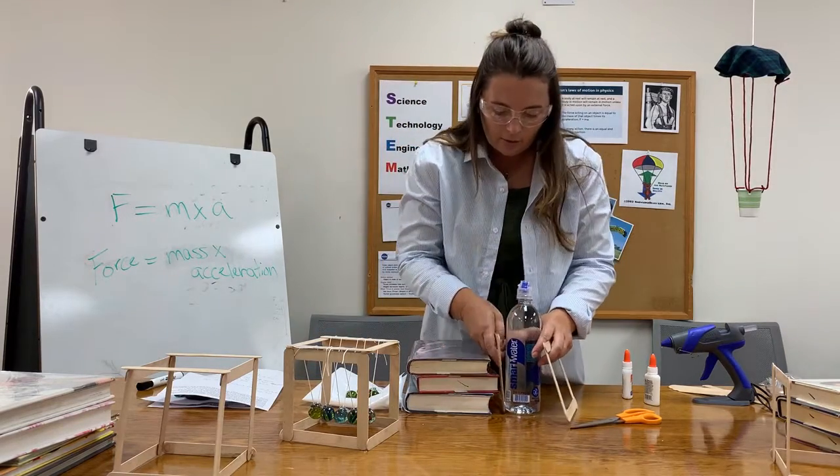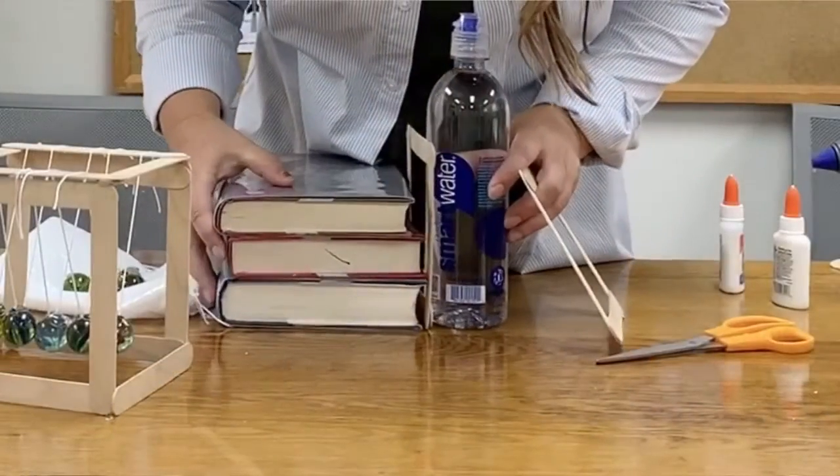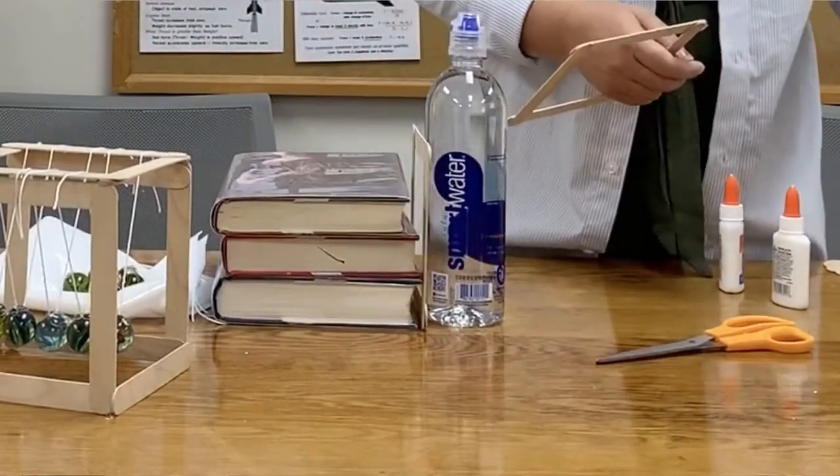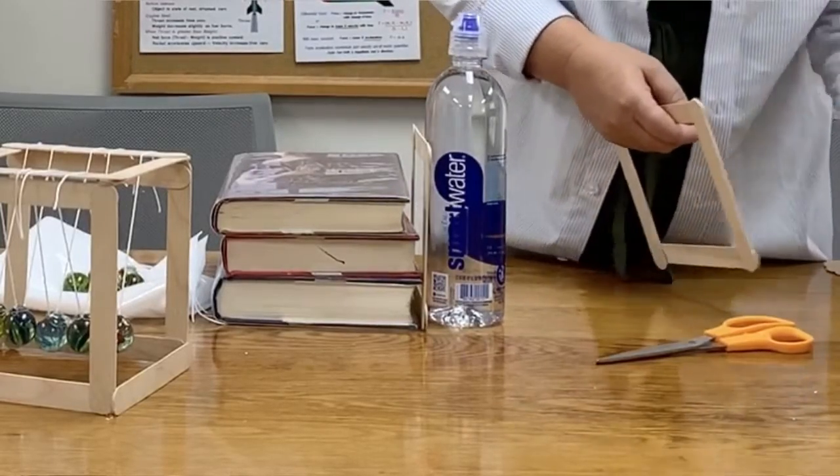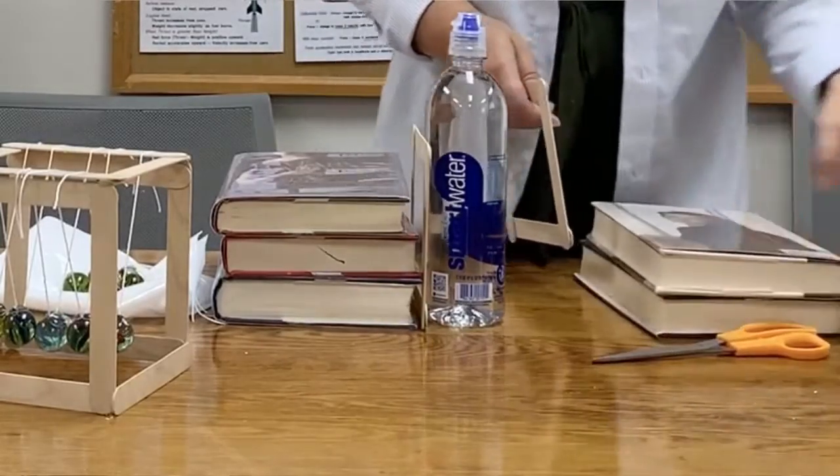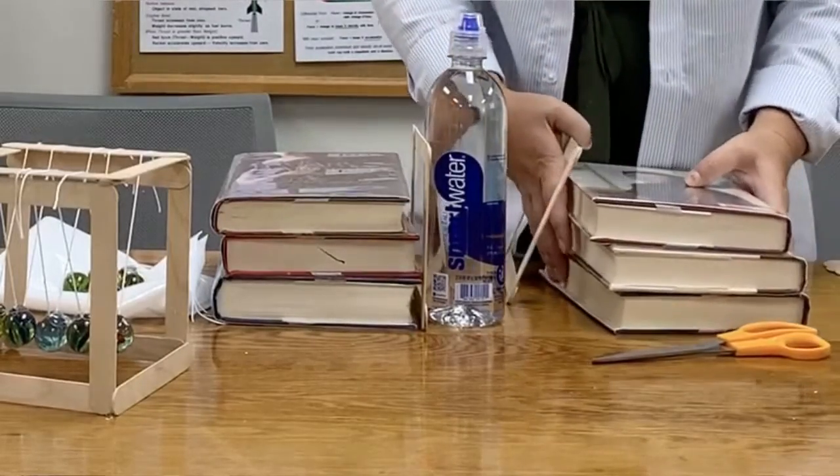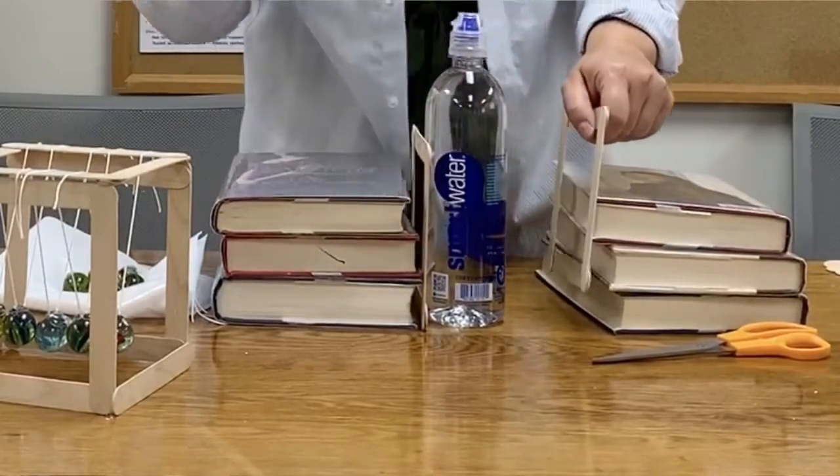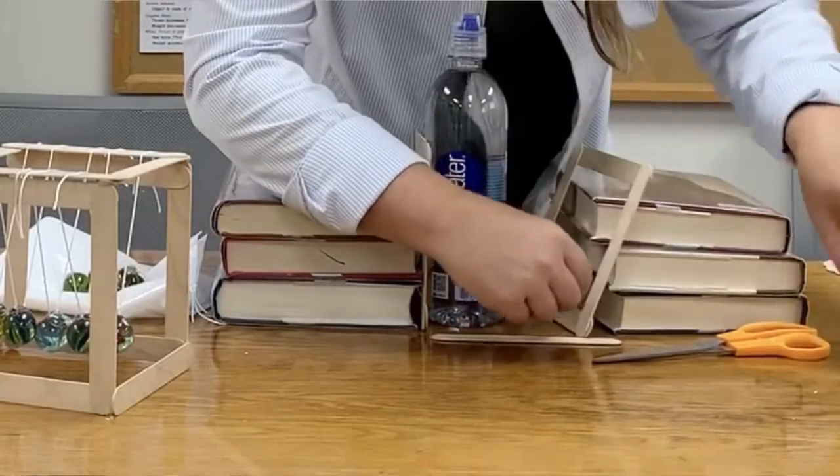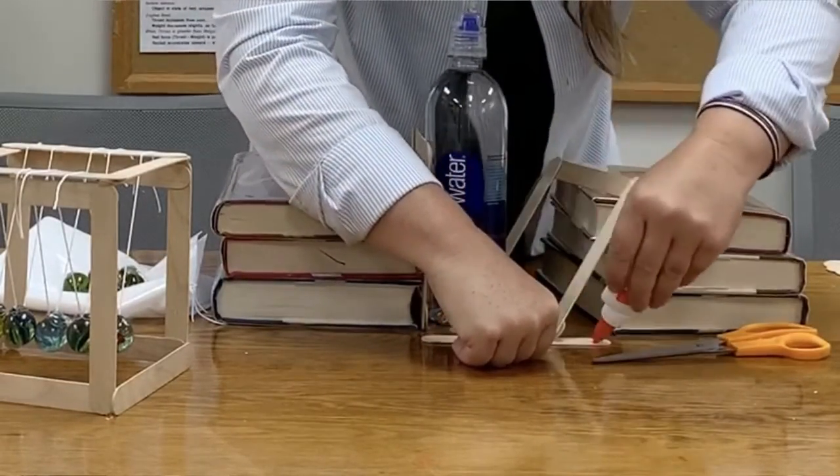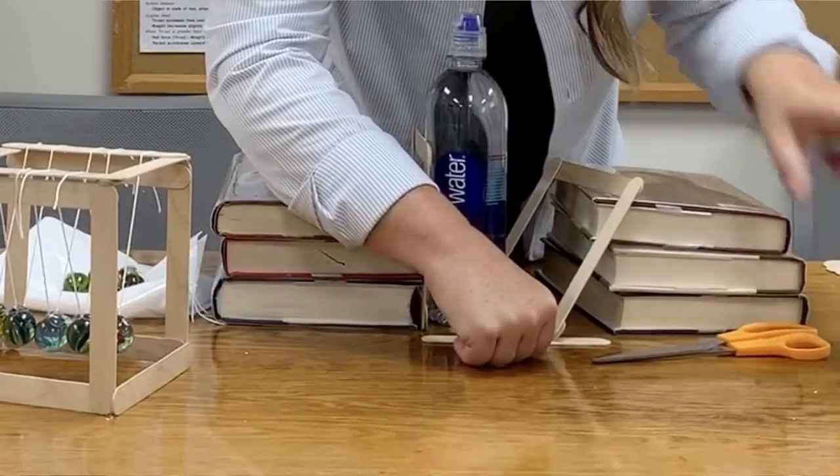So I'm going to go ahead and just wedge this one right there and then some more books. And you're going to take a popsicle stick and you're going to glue. I glue on the one that's laying down. It's the easiest to move.